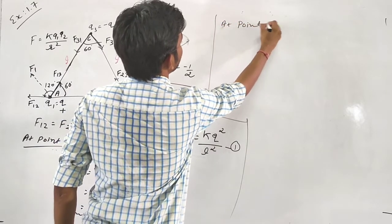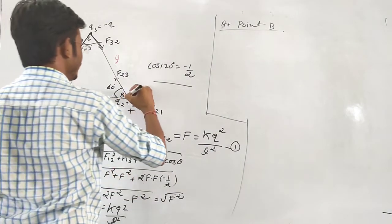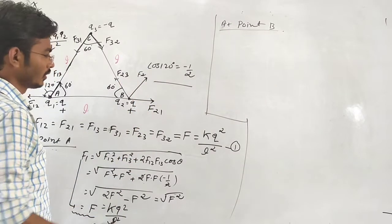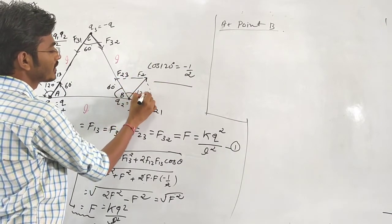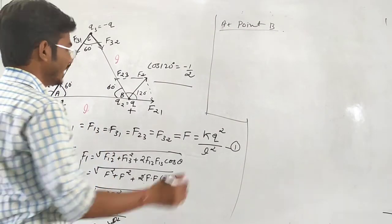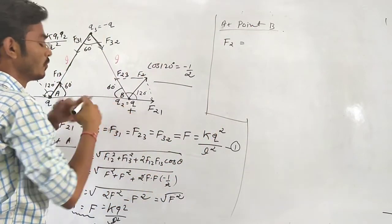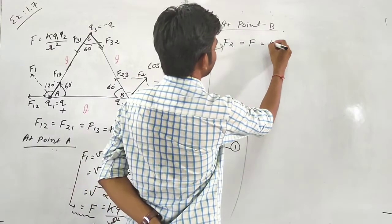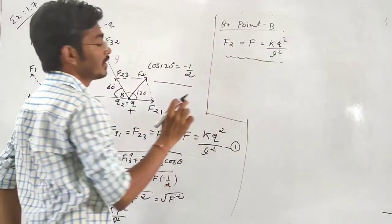At point B, the resultant force is found using the parallelogram law. The calculation gives the same quantity. Therefore, F2, the resultant force at point number B, equals F3, and using equation number 1 we can write k Q squared divided by L squared.